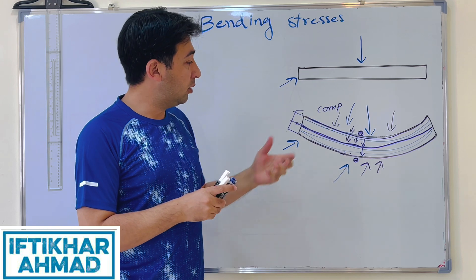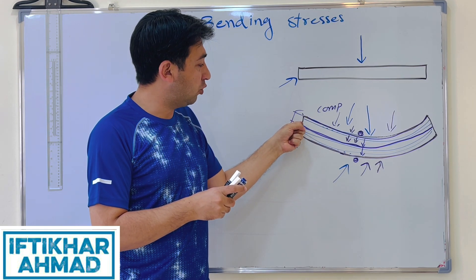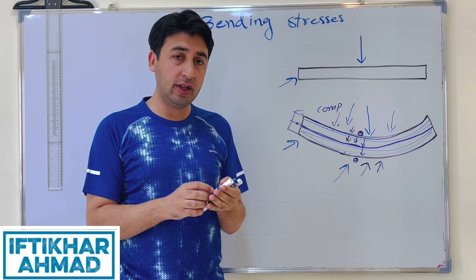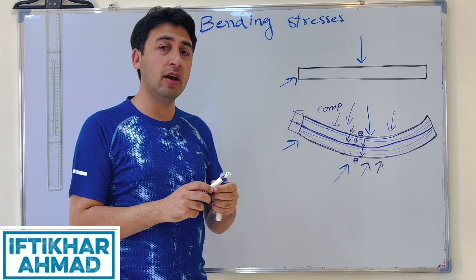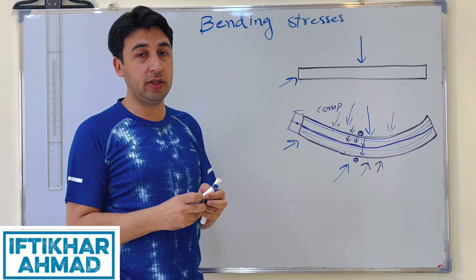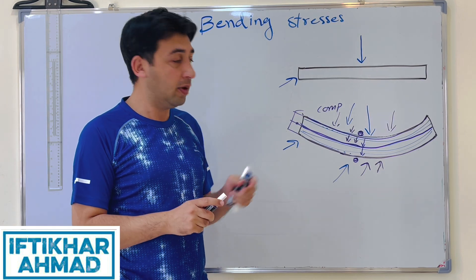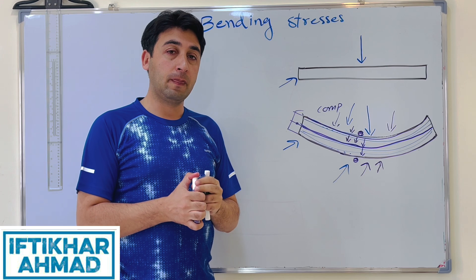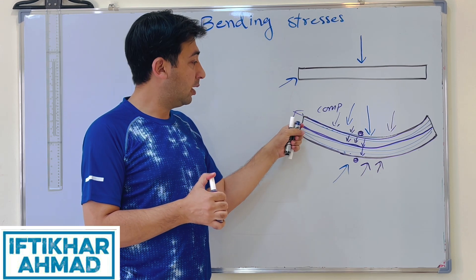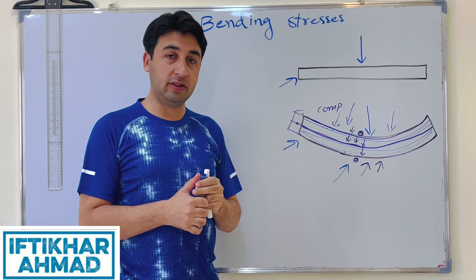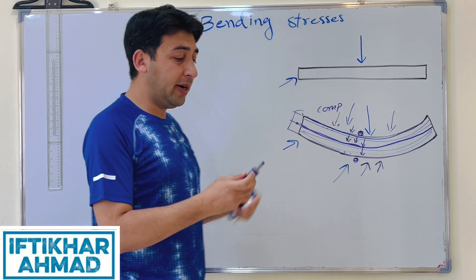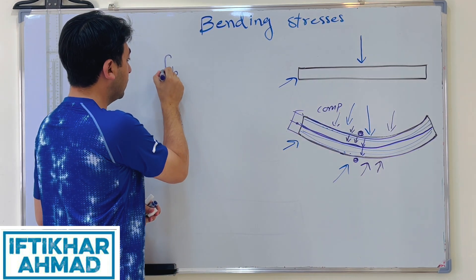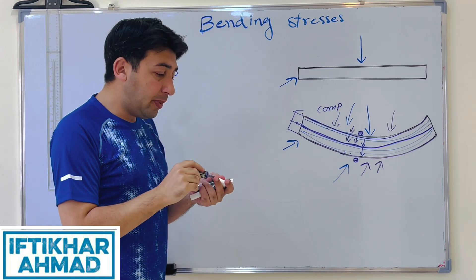The centroid is related to the bending stresses and bending moment. We have done a video on how to find the moment of inertia for different cross-sections, available in the description. The moment of inertia of the cross-section is also involved in the bending stress relationship. We represent bending stresses with fb.